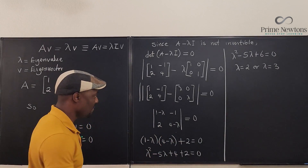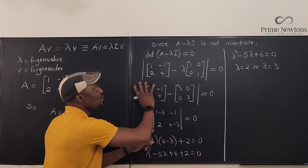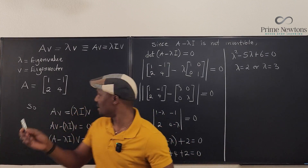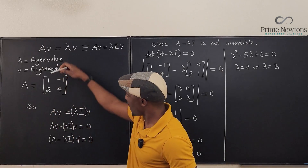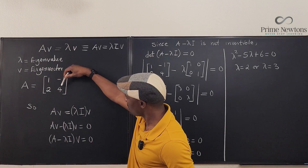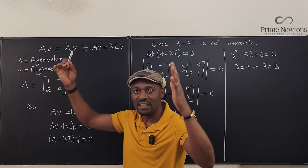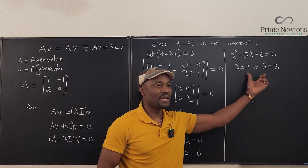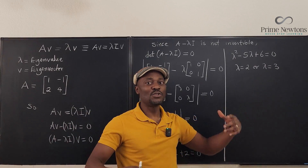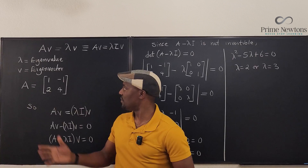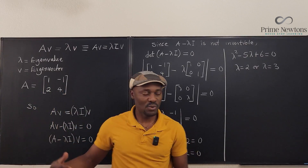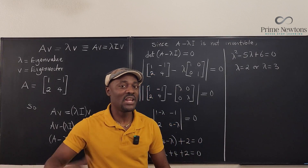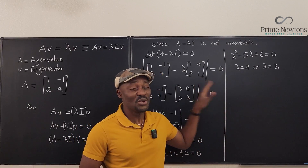These two lambdas — λ = 2 and λ = 3 — are the eigenvalues. To summarize the shortcut: when given a matrix, subtract λ from each diagonal entry, take the determinant of the resulting matrix, set it equal to zero, and solve the quadratic to get your eigenvalues. The earlier derivation was just the theoretical justification.